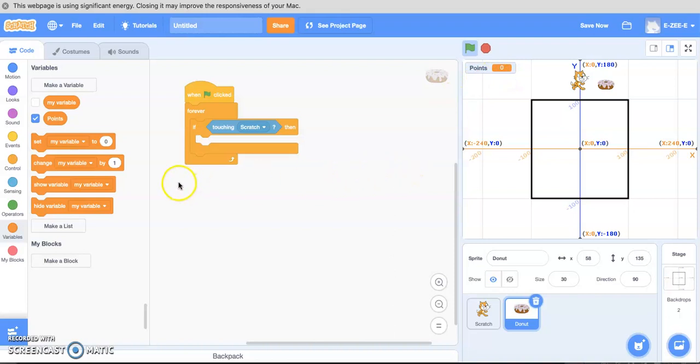So what we're going to do is say we want to increase the points by one. So we're going to change and go to the drop-down points by one. See how this works. Scratch moves and pop.